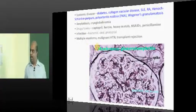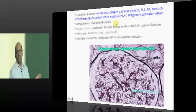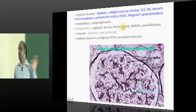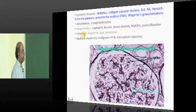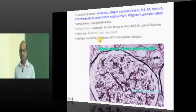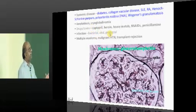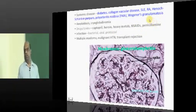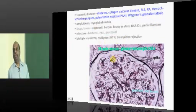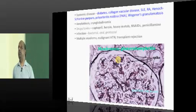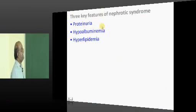Similarly, diabetes, SLE, lupoid arthritis, Henoch-Schönlein purpura, polyarteritis, Wegener's - all these connective tissue disorders can lead to proteinuria. Similarly, amyloidosis, cryoglobulinemia, certain drugs which can injure the tubule including captopril, aminoglycosides, NSAIDs, penicillamine, any bacterial or viral infection, multiple myeloma, malignant hypertension, or transplant rejection presents as proteinuria.